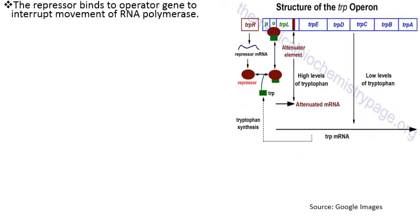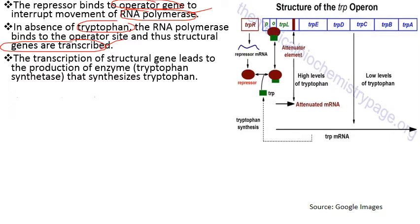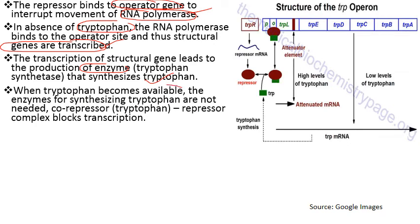The active repressor binds to the operator gene and interrupts the movement of RNA polymerase. In the absence of tryptophan, RNA polymerase binds to the operator site and the structural genes are transcribed. The transcription of structural genes leads to the production of enzymes such as tryptophan synthetase that synthesize tryptophan. When tryptophan becomes available, the enzymes for synthesizing tryptophan are not needed; tryptophan binds with the apo-repressor to form the active repressor, which binds to the operator region and stops transcription.